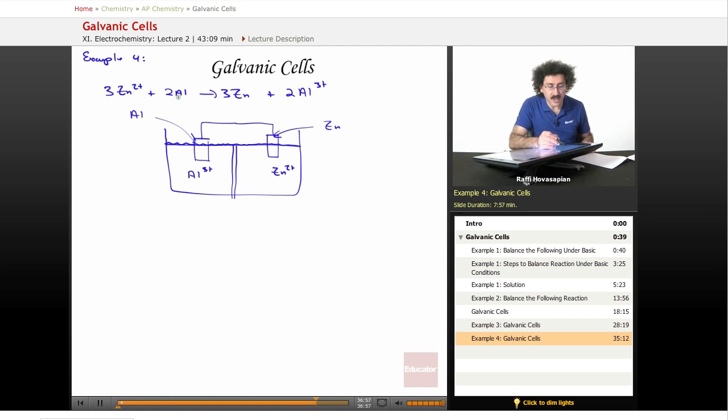Zinc is being reduced, aluminum is being oxidized. Here's the aluminum, it is oxidized - oxidation, anode. So this is the anode, this is the cathode.